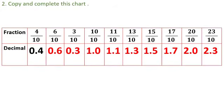Copy and complete this chart. There is a given fraction and we have to write the decimal number. First: 4 by 10, answer is 0.4. Next: 6 tenths is 0.6. Next: 3 tenths is 0.3. Then: 10 tenths is 1.0. Then: 11 tenths is 1.1. Then: 13 tenths is 1.3. Then: 15 tenths is 1.5. Then: 17 tenths is 1.7. Then: 20 tenths is 2.0. Then: 23 tenths is 2.3. Just divide numerator by denominator, you will get the answer.